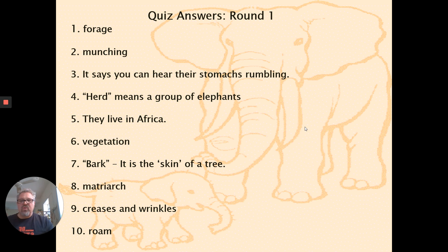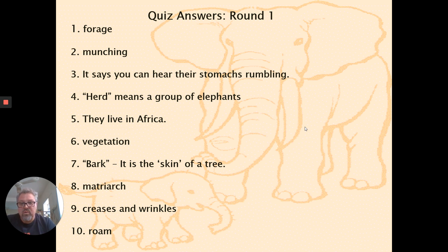Here are your answers so you can self-check: forage, munching, rumbling, herd, Africa, vegetation, bark — bark here is the outer skin of a tree, called 'xù pí' in Chinese — matriarch, creases and wrinkles, and roam. To roam around means to travel around without a particular destination.